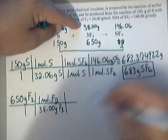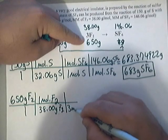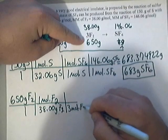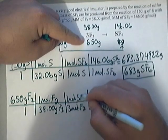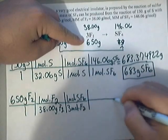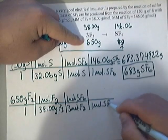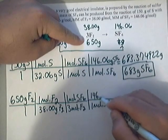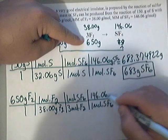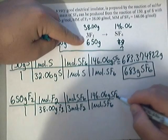Now looking at the molar ratio, there are three moles of F2 and looking here there's just one mole of SF6. Got to keep going.